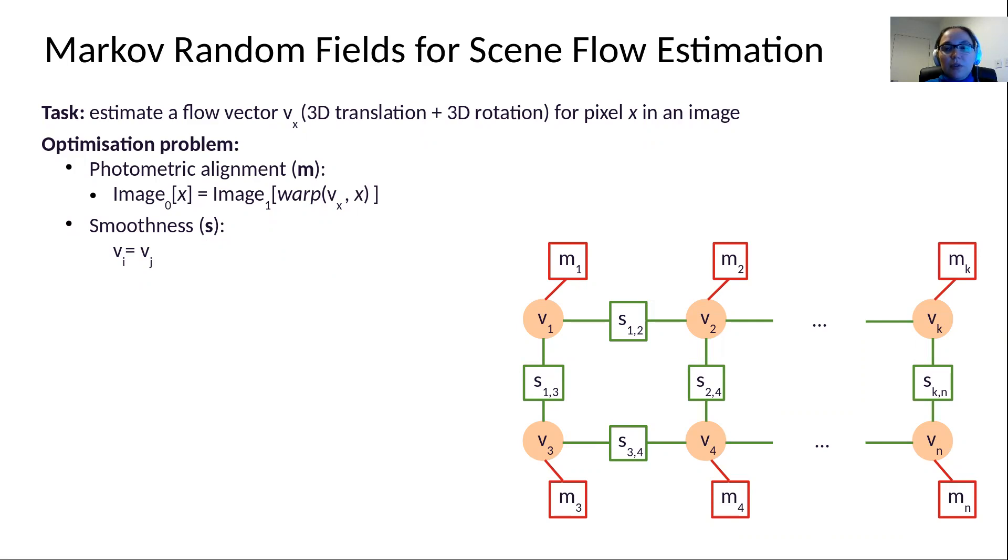First, the per-pixel photometric alignment factor M is the data term. It solves for a flow vector that ensures that the pixel in the first image will have the same intensity value when it is warped towards the second image. Second, the flow field is regularized using smoothness factors as shown in green, which ensures that pairs of flow variables have similar values. This graph shows one of the simplest types of smoothing, which is enforced between neighboring variables. This ensures that the flow field is locally smooth and is also efficient to implement on the GPU.